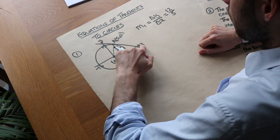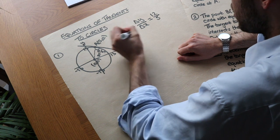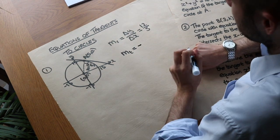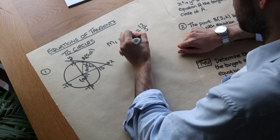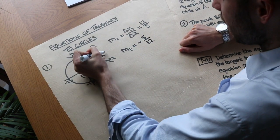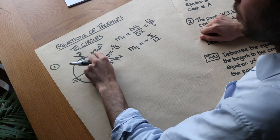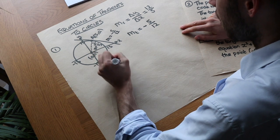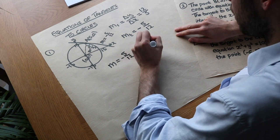To find the gradient of a line perpendicular to the radius, we use the negative reciprocal. So the gradient of the tangent, mt, is the negative reciprocal of 12 over 5. We negate it — so it becomes negative — and reciprocate it, which flips the fraction upside down, giving minus 5 over 12. So the gradient of this tangent is minus 5 over 12.